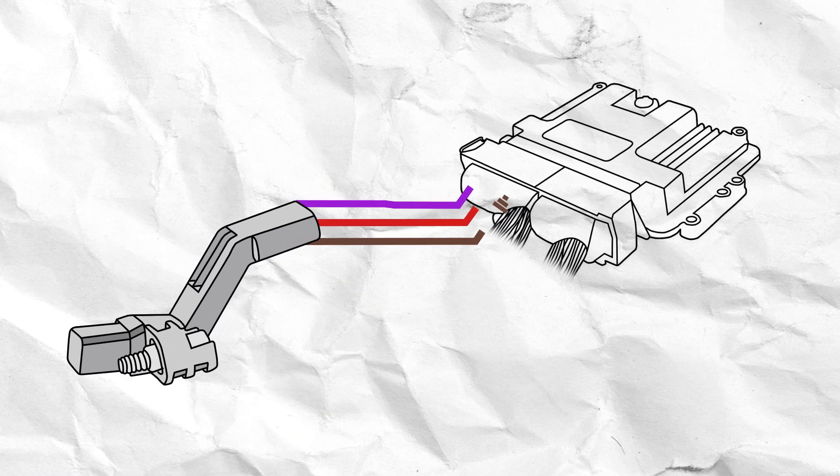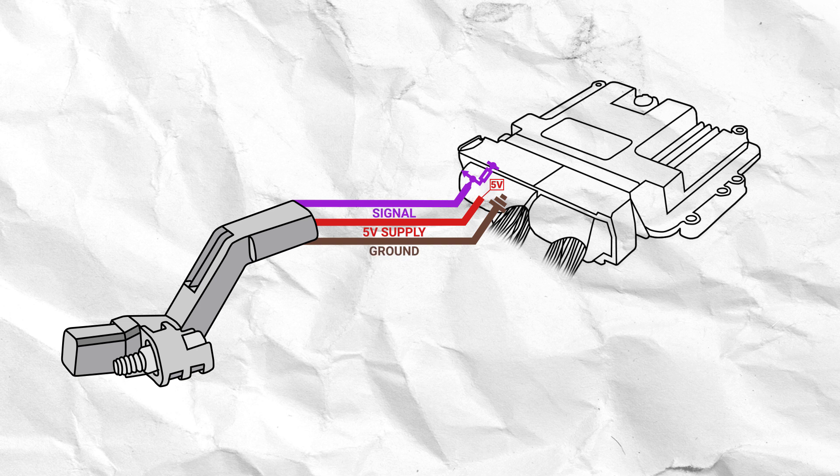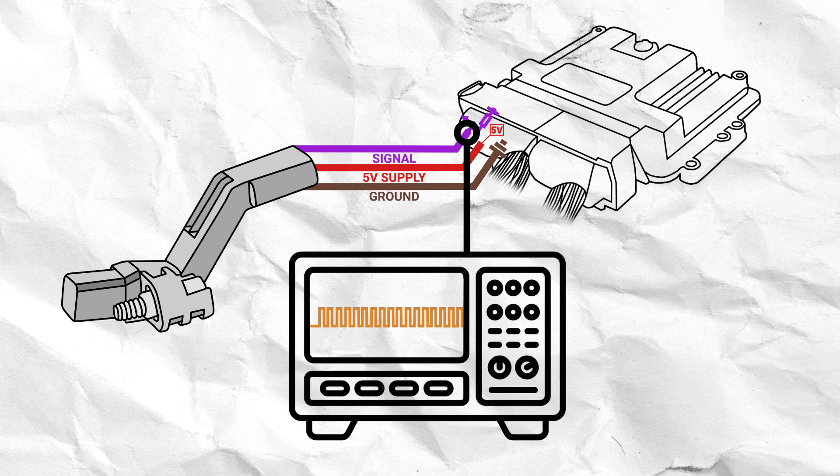These sensors typically have three wires, a high and low reference, also known as a 5 volt supply and ground, and a signal wire, which is responsible for passing information to the ECU in the form of a square waveform.